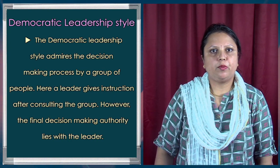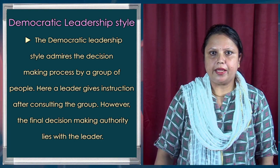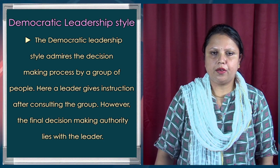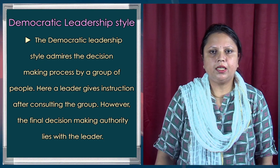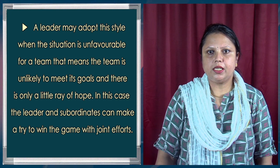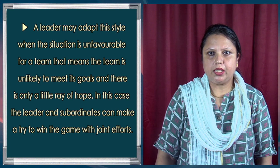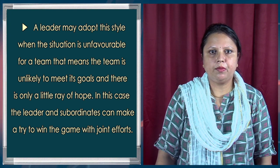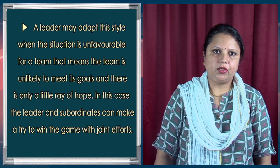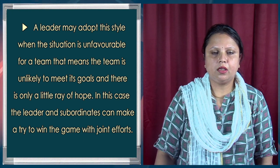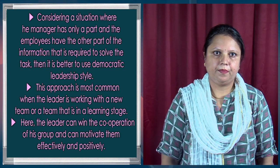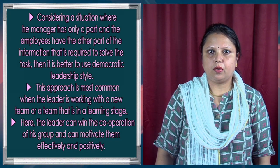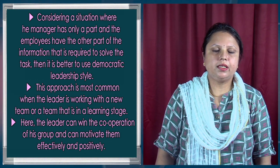Next, we will discuss democratic leadership style. The democratic leadership style involves the decision-making process by a group of people. A leader gives instruction after consulting the group; however, the final decision-making authority lies with the leader. The leader may adapt this style when the situation is unfavorable for the team — when the team is unlikely to meet its goal and there is only a little ray of hope. In this case, the leader and subordinates can try to win together with joint efforts. When the manager has only part of the information and employees have the other part required to solve the task, it is better to use the democratic style.